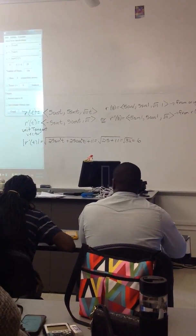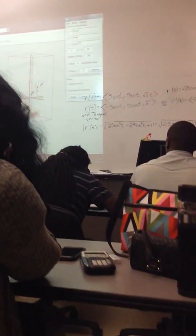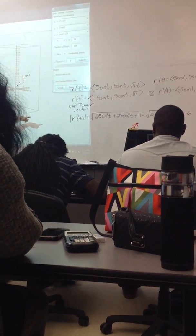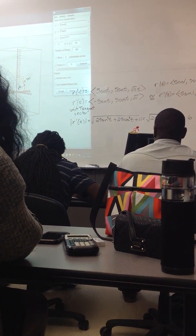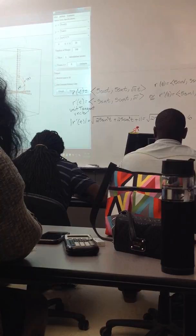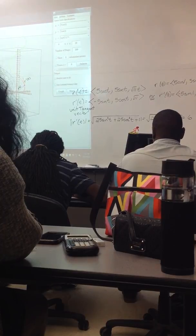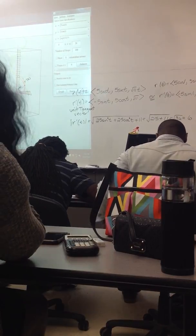So for this particular curve, no matter where you make a tangent vector, its length is 6. For this particular curve. Other curves, that won't be the case. But this circular helixing type curve, it is the case.